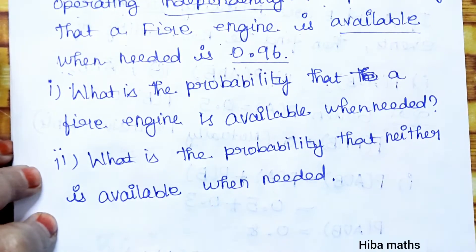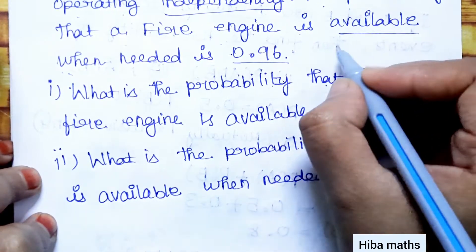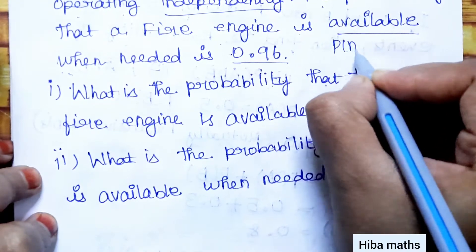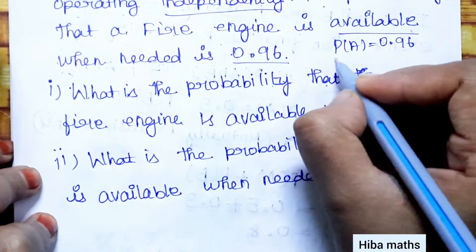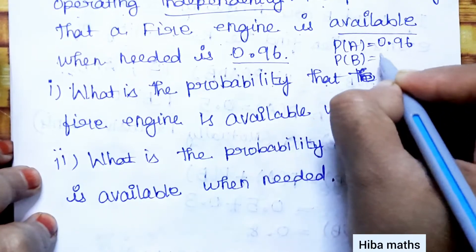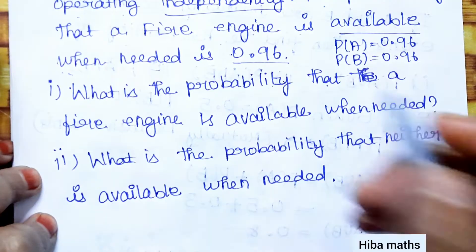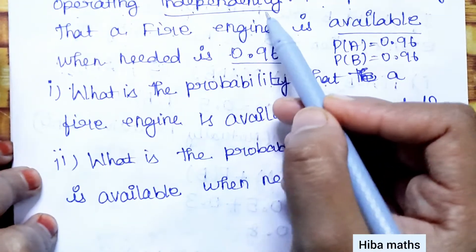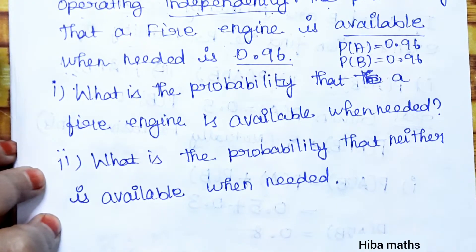There are two fire engines in a town, two are independent. The probability that a fire engine is available: P(A) = 0.96, and this fire engine B, P(B) = 0.96. A and B are independent events. If they are mutually exclusive we get 0, but independently P(A∩B) = P(A) · P(B). This is the condition.